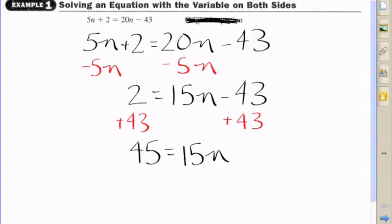Now, of course, just divide both sides by the coefficient 15, and I'm left with 3 equals n. So I've solved for n. n equals 3.